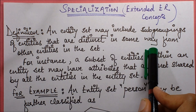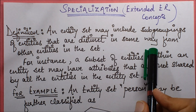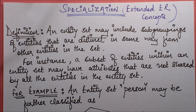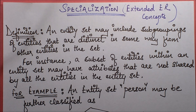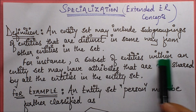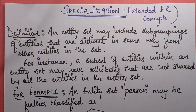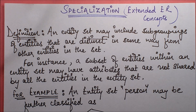What this actually means is that you may have an entity set which has some members that are distinct from each other, and on the basis of that we can form subgroupings. For example, a subset of entities within an entity set may have attributes that are not shared — that is the condition when such a thing can occur.